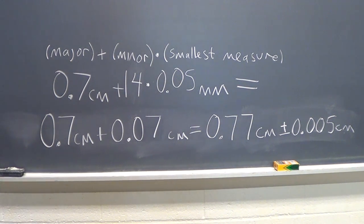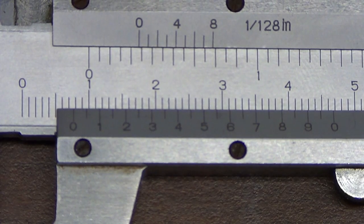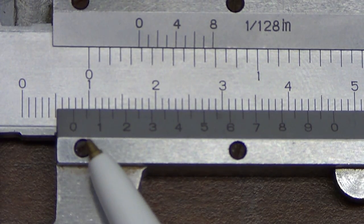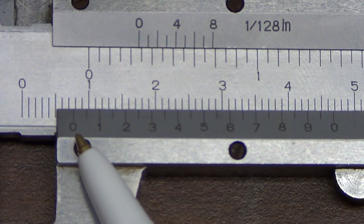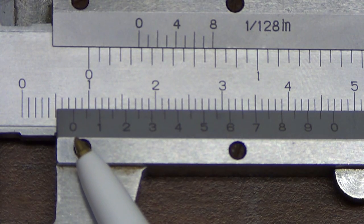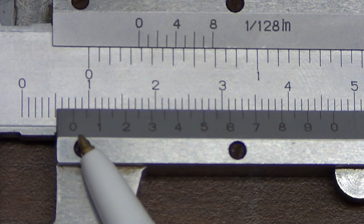As a check, this makes sense because the value should be between 0.7 centimeters and 0.8 centimeters. And if we look back at our original measurement, we see that our zero mark on the minor scale is close to the 0.8. So 0.77 centimeters makes sense.